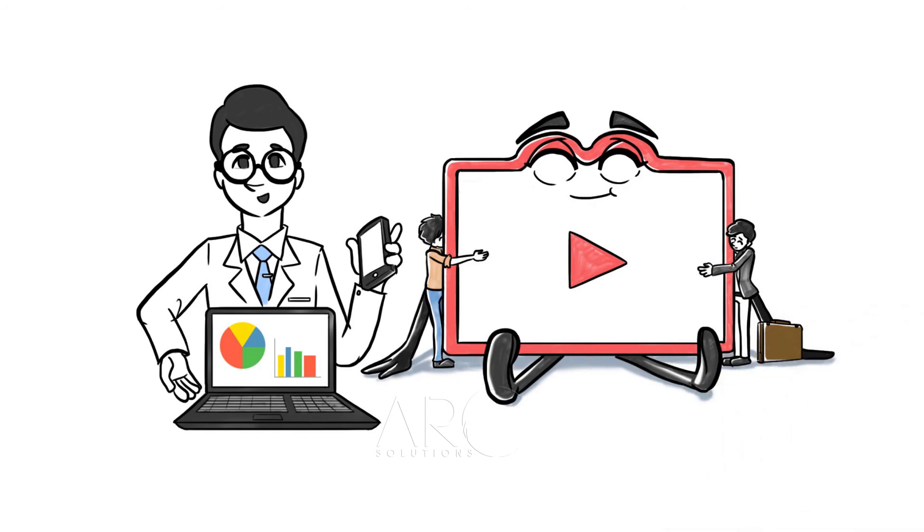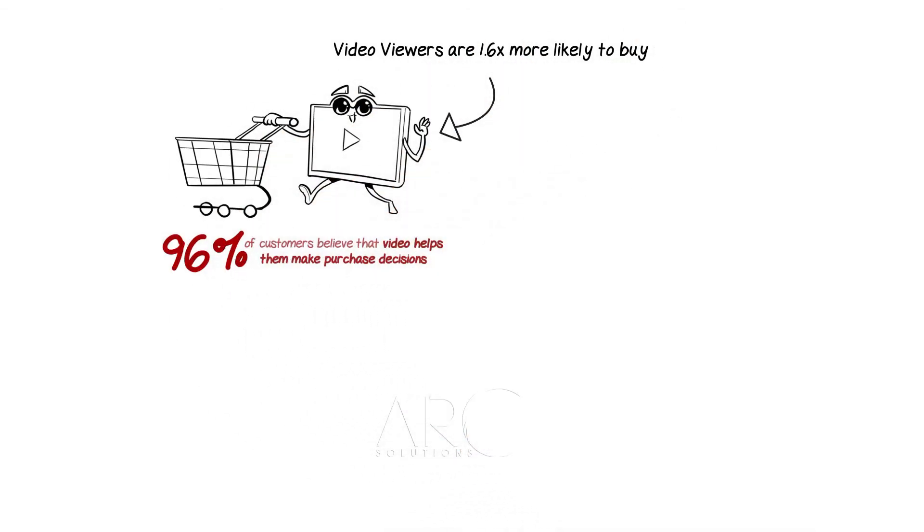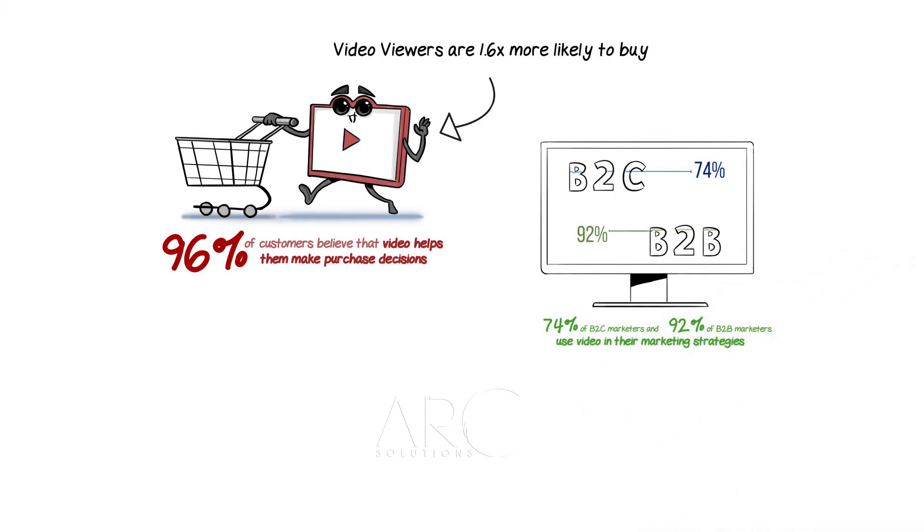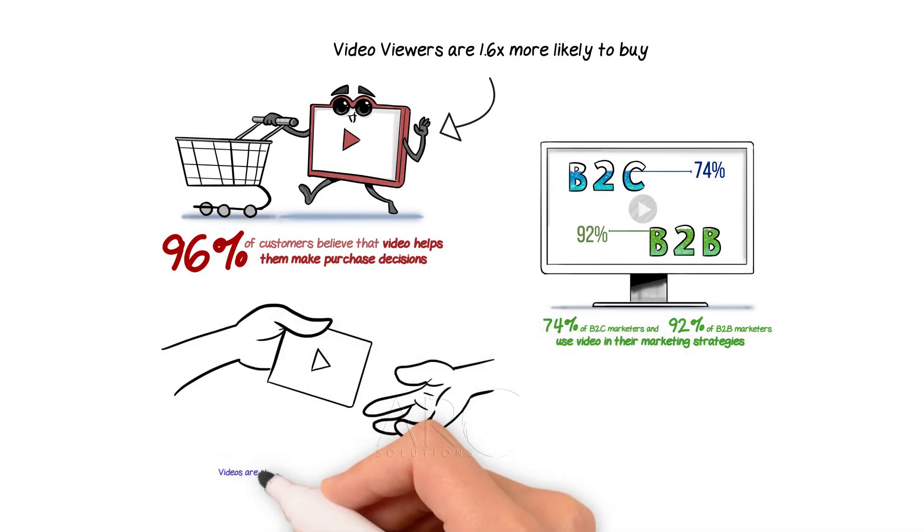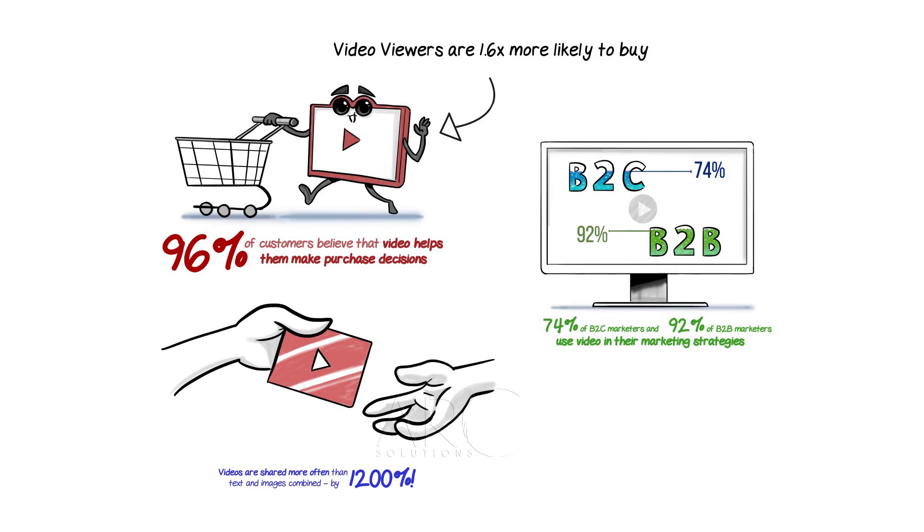Let's turn to figures collected in an Envato report on the results of 2014 to 2015. Video viewers are 1.6 times more likely to buy. 96% of customers believe that video helps them make purchase decisions. 74% of B2C marketers and 92% of B2B marketers use video in their marketing strategies. Social videos are shared more often than text and images combined by 1,200%. It doesn't end here. There are still a lot of facts and figures to prove in our study.